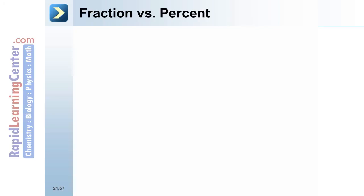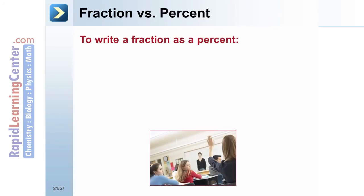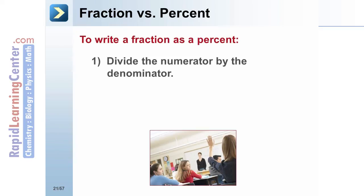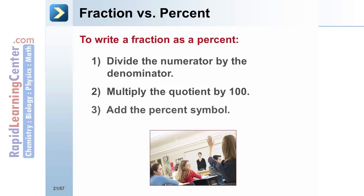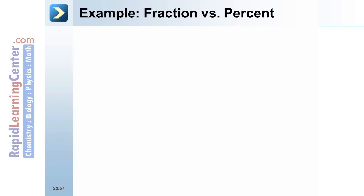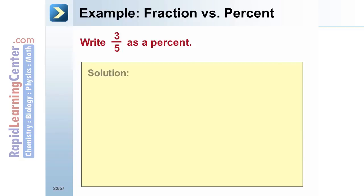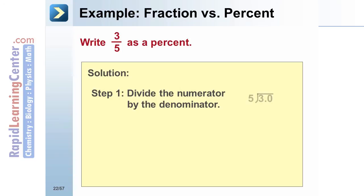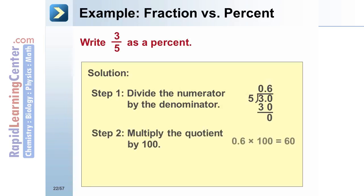To write a fraction as a percent: (1) divide the numerator by the denominator, (2) multiply the quotient by 100, and (3) add the percent symbol. Example: write three-fifths as a percent. Divide 3 by 5 to get 0.6, then multiply 0.6 times 100 to get 60, and add the percent symbol. Three-fifths equals 60%.